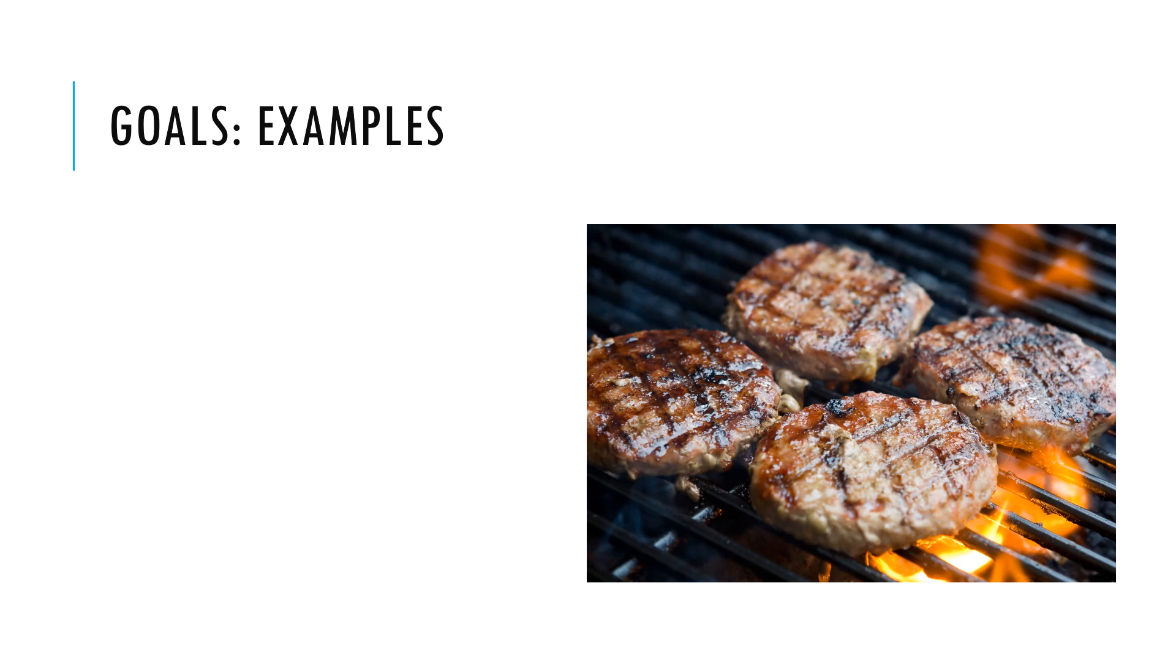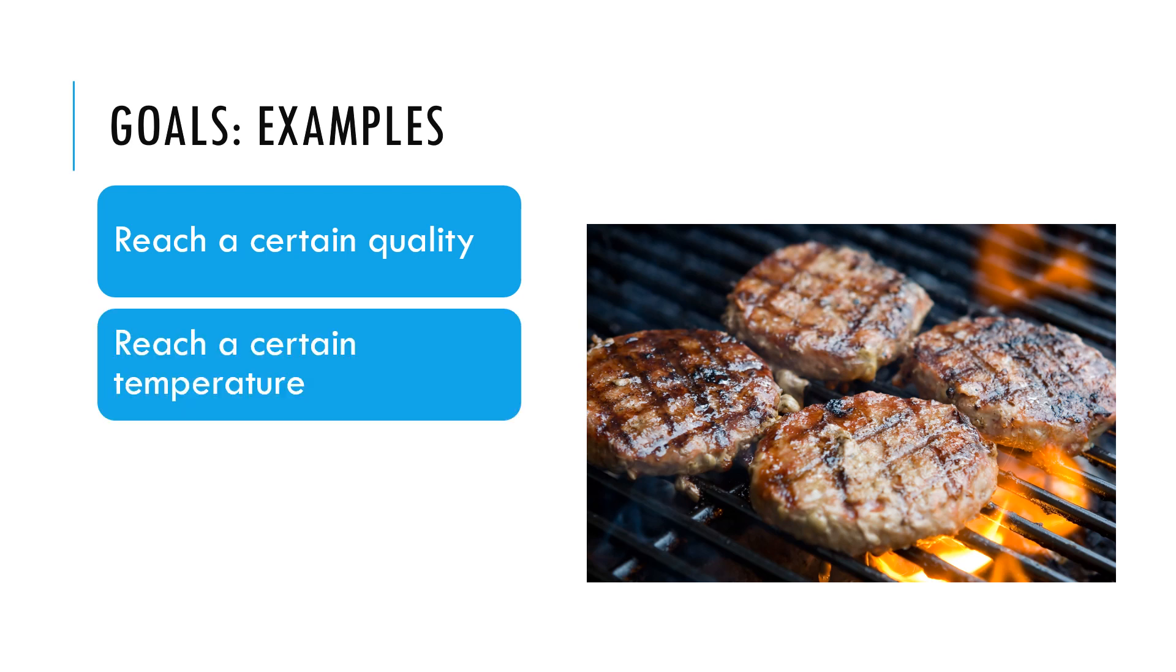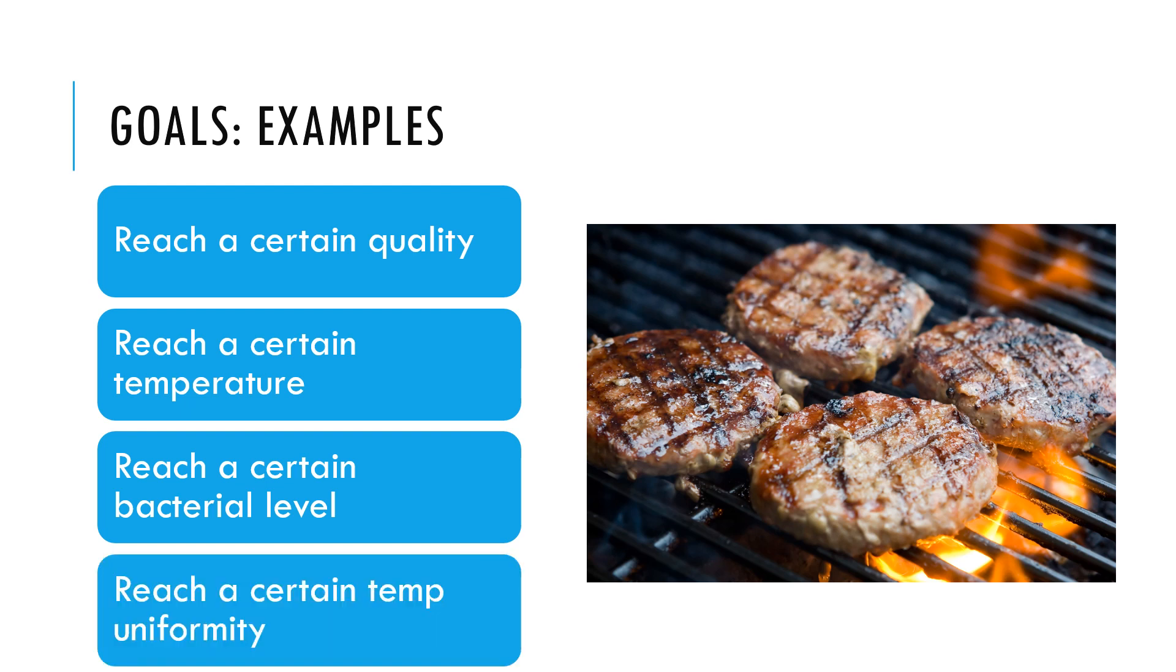In this meat cooking example, if we relate the texture of the meat by Young's modulus and we know how the Young's modulus changes with temperature, moisture, etc., then we can compute quality directly. It is important to set our goal quantitatively that can be computed, like reaching a certain temperature, bacterial level, or temperature uniformity. How we set the goal decides how we build the model.